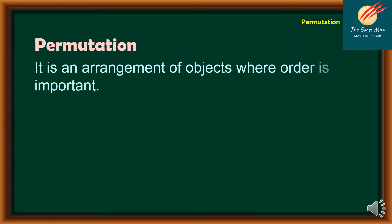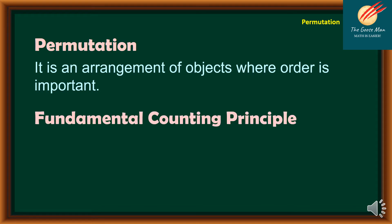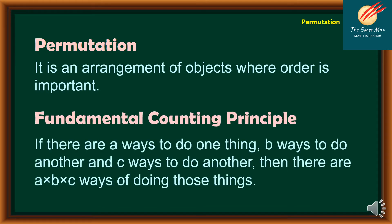Whenever you say permutation, it is an arrangement of objects where order is important. With this permutation, we will use the fundamental counting principle. It states that if there are A ways to do one thing, B ways to do another, and C ways to do another, then there are A times B times C ways of doing those things.